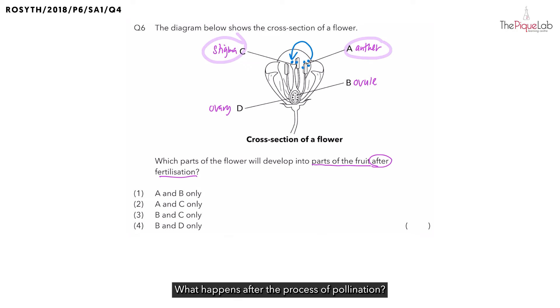What happens after the process of pollination? The male reproductive cells inside the pollen grain must reach the female reproductive cells which are inside the ovule. So, a long pollen tube will grow down towards the ovary towards the ovule to transfer the male reproductive cells to the female reproductive cells.